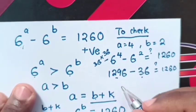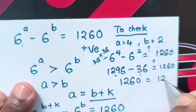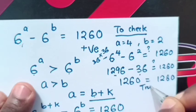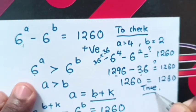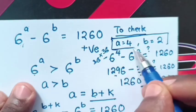This minus this is equals to 1260, which is same as to the right side. So, our answers are true for the value of a and b.